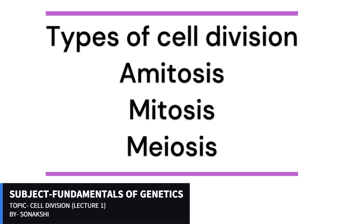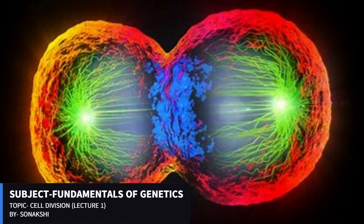There are three types of cell division. The first is amitosis, which means direct cell division. The second is mitosis. The third is meiosis, in which the number of chromosomes is reduced to half — so if the parent cell has chromosome number 2N, the resulting cells will have chromosome number N.